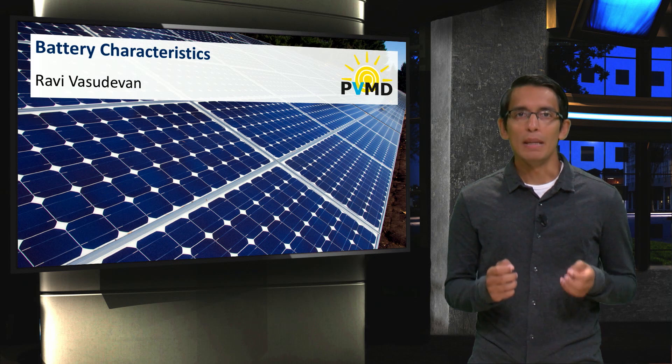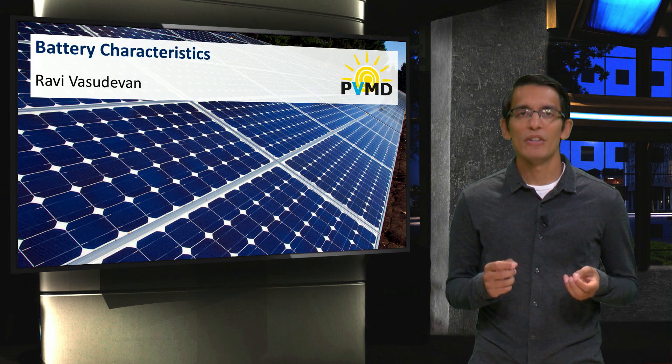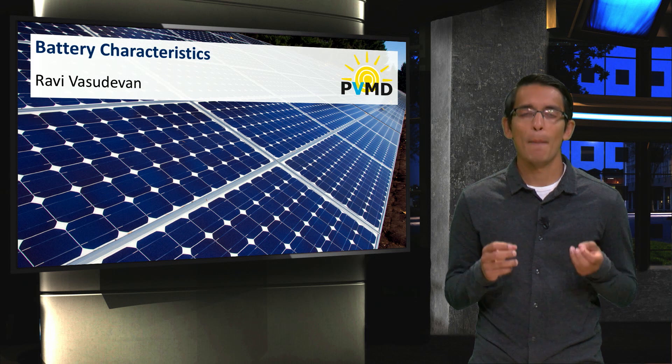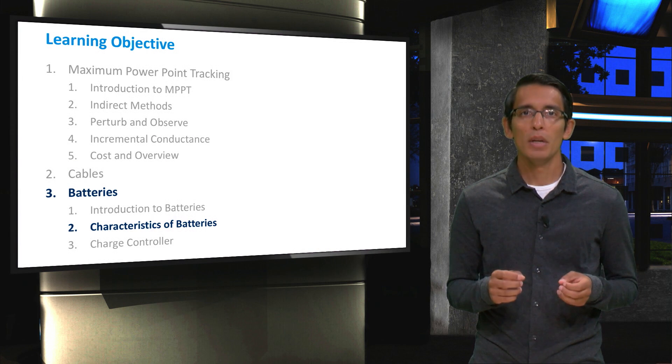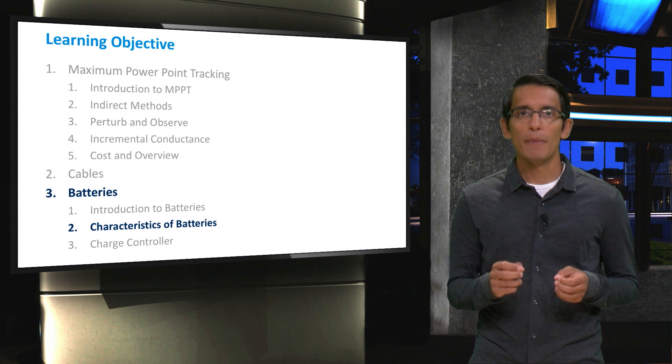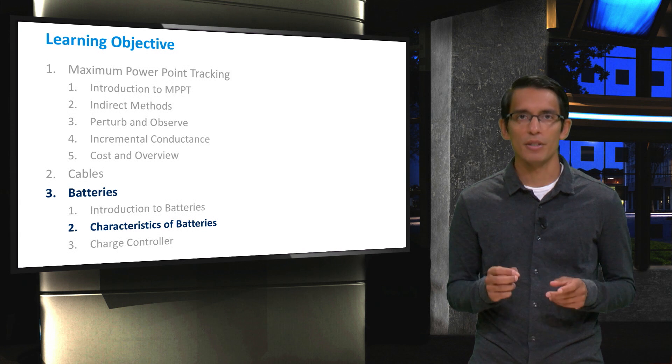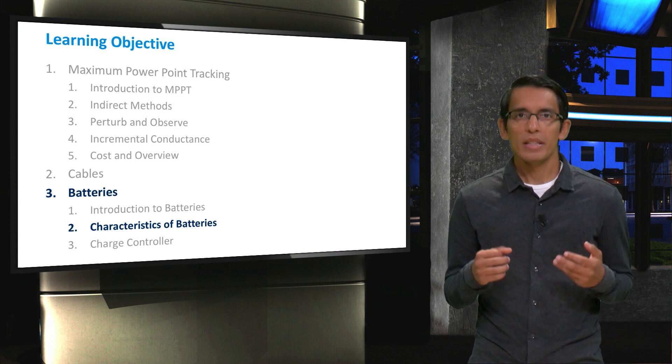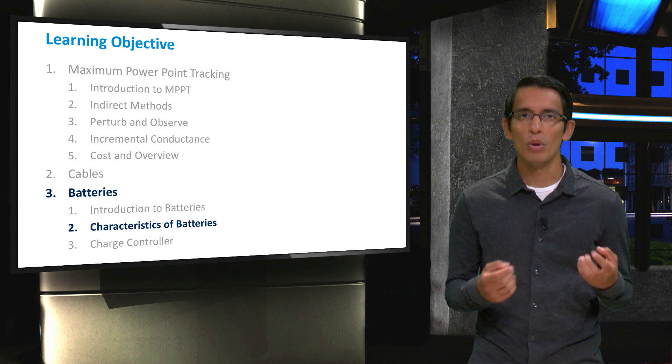Now that you understand why we need batteries in off-grid systems, it is time to learn a bit more about some important characteristics about batteries. The learning objective of this video is to understand some parameters that we use to characterize batteries. These parameters are important to be considered when choosing a particular type of battery for a PV system. Also, some of these parameters will be used later in the course while designing a PV system with batteries.